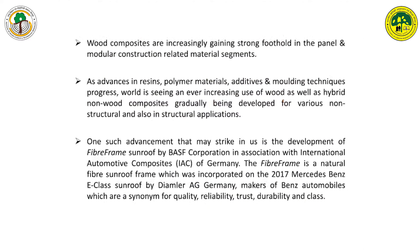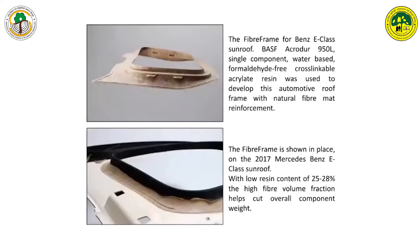Wood composites are increasingly gaining a strong footprint in panel and modular construction related material segments. One such main advancement is the development of the fiber frame roof by BASF corporation, initially introduced in 2007 by Daimler AG Germany in the Benz E-Class automobiles. The sunroof was made with a natural fiber matte component having about 25–28 percent of BASF acrylic-based resins, which were formaldehyde-free and single-component water-based resins.